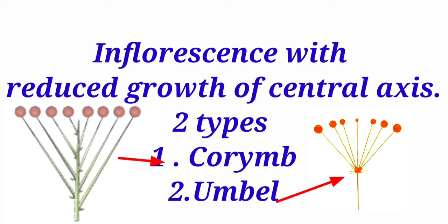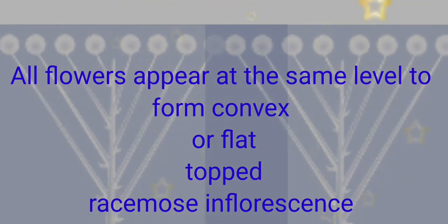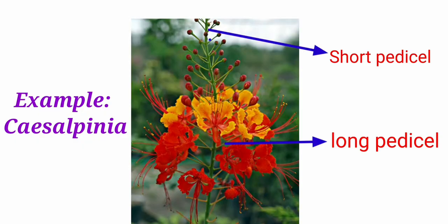First we are going to see about the corymb. Here the inflorescence is found with shorter pedicellated flowers at the top of the inflorescence and longer pedicellated flowers found at the bottom. The pedicel is the stalk of the flower which helps to attach the flower to the central axis, that is the peduncle. All flowers appear at the same level to form either a convex or flat-topped inflorescence. The example for the corymb is Caesalpinia. In this picture you could find the difference in the length of the pedicel: the flowers and buds at the top region have a shorter pedicel than the flowers present at the bottom.